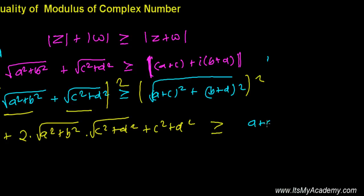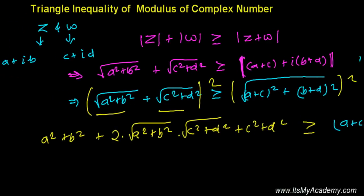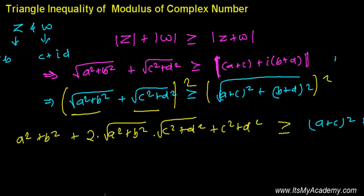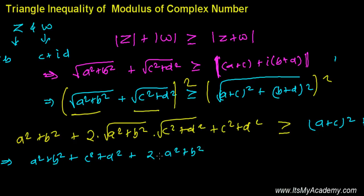The square roots are removed from both sides. The left side expands to a² + b² + c² + d² + 2√(a² + b²)·√(c² + d²), which must be greater than or equal to (a + c)² + (b + d)².